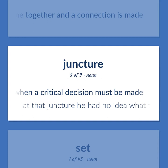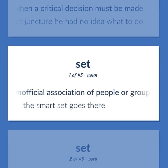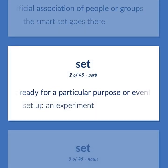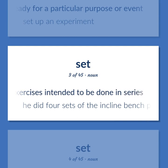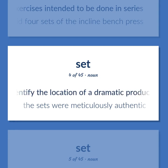Juncture / Set: A crisis situation or point in time when a critical decision must be made — at that juncture he had no idea what to do. Set: An unofficial association of people or groups — the smart set goes there. Get ready for a particular purpose or event — set up an experiment. Several exercises intended to be done in series — he did four sets of the incline bench press. Representation consisting of the scenery and other properties used to identify the location of a dramatic production — the sets were meticulously authentic.